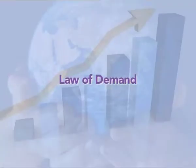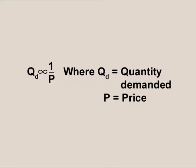Law of Demand. The law of demand presents the functional relationship between price and quantity demanded. The statement of the law is as follows: the quantity demanded increases when price falls and quantity demanded decreases when price rises, other things remaining constant. Thus, price and quantity demanded are inversely related, keeping other affecting variables constant.